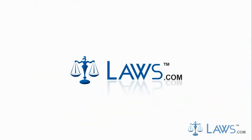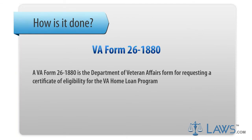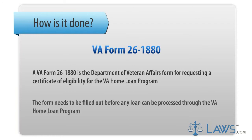Laws.com Legal Forms Guide. A VA Form 26-1880 is the Department of Veterans Affairs form for requesting a Certificate of Eligibility for the VA Home Loan Program. The form needs to be filled out before any loan can be processed through the VA Home Loan Program.